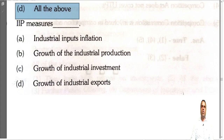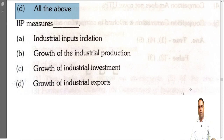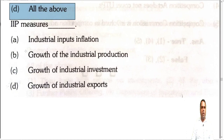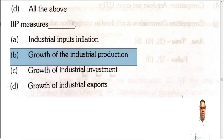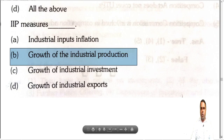Second question: IIP measures what? The answer is growth in industrial production. IIP stands for Index of Industrial Production — it measures how much industrial production has improved compared to the past year. The first option, industrial inputs inflation, is wrong. Growth of industrial investment or growth of industrial export are also wrong options. IIP measures the growth of industrial output — how much industrial output has increased.